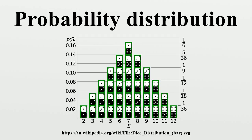While for a discrete distribution an event with probability 0 is impossible, this is not so in the case of a continuous random variable. For example, if one measures the width of an oak leaf, the result of 3.5 cm is possible. However, it has probability 0 because uncountably many other potential values exist even between 3 cm and 4 cm. Each of these individual outcomes has probability 0, yet the probability that the outcome will fall into the interval is non-zero. This apparent paradox is resolved by the fact that the probability that X attains some value within an infinite set, such as an interval, cannot be found by naively adding the probabilities for individual values.